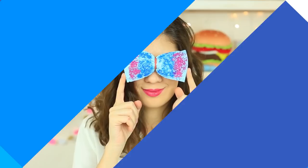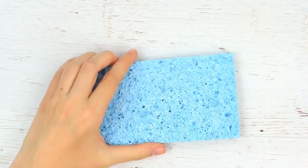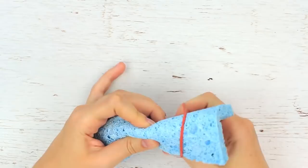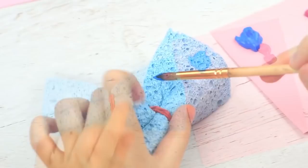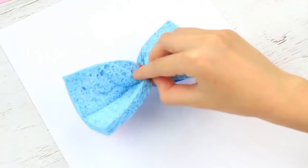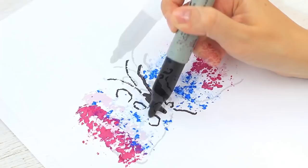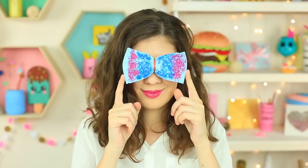Make an abstract butterfly using a sponge. Take a cellulose sponge. Wrap a rubber band around the middle to get a bow. Paint it in two colors. Stamp it on the paper. Complete drawing a butterfly with a marker. You can leave it as it is or make a butterfly pattern.